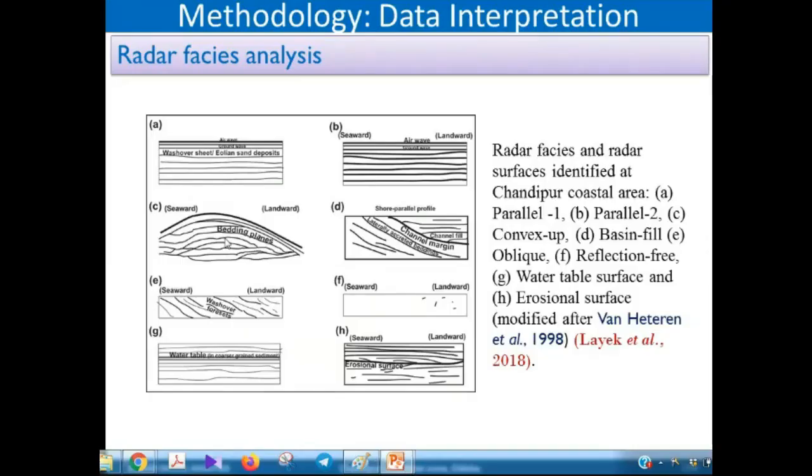Radar facies is the set or assemblages of radar reflections. If there is a parallel reflection and the reflection configuration is medium to high amplitude, continuous and parallel to sub-parallel to each other, then it could be washover sheets or yellow sand. If it's very high amplitude, then it will be a gravel deposit.